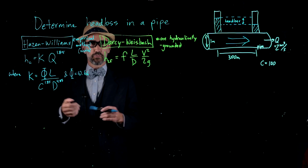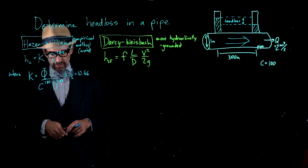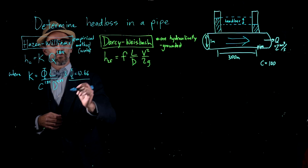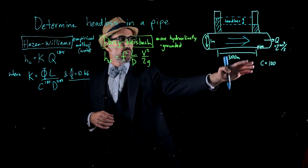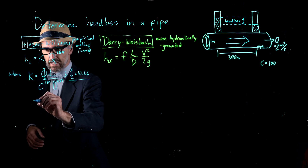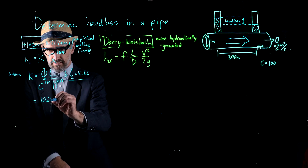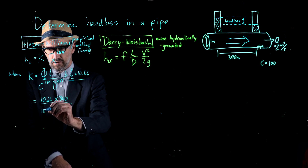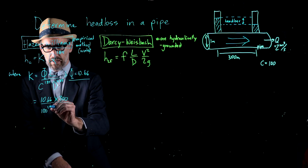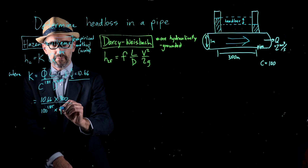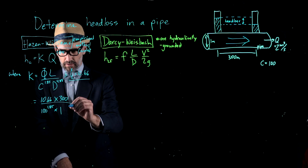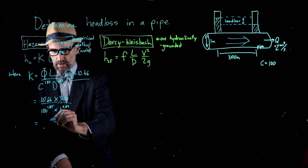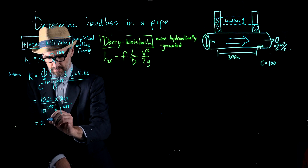These are unusual exponents because this is an entirely empirical equation, again only for water. This omega is the coefficient for metric units, which is what we have here in meters. To solve for K: K equals 10.66 multiplied by the length of 300, divided by C — which is 100 — to the exponent 1.85, multiplied by D — the diameter of 1 meter — to the exponent 4.87. This results in a K value of 0.638.